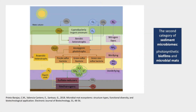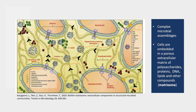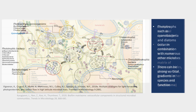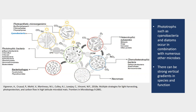The second category of sediment microbiomes is that of photosynthetic biofilms and microbial mats. These are complex microbial assemblages where cells are embedded in a porous extracellular matrix of polysaccharides, proteins, and other compounds called the matrixome. Phototrophs such as cyanobacteria and diatoms occur in combination with numerous other microbes, and there can be strong vertical gradients in species and function.